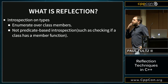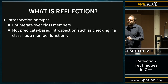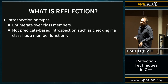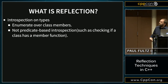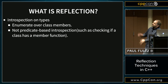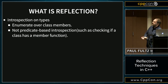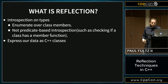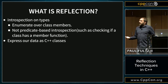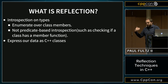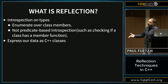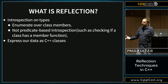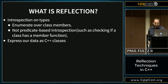When most people refer to reflection, they're not really referring to predicate-based introspection — deciding whether a class has a function foo or not. That's already kind of a solved problem in C++ for most cases. Generally, reflection means being able to enumerate over each of the members. By being able to introspect on types, it gives us a way to treat our data as pure C++ classes, which gives us an extra level of type safety when dealing with data-driven applications.